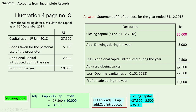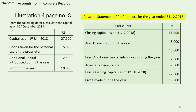Now we check whether we are correct. Closing capital 35,000, add drawings 5,000, gives 40,000. Minus additional capital 2,500 gives 37,500 as adjusted closing capital — correct. Opening capital given is 27,500. When you subtract that, you get profit of 10,000 which is given in the problem. So what we have done is correct. First find adjusted closing capital: opening capital plus profit. Then closing capital: adjusted closing capital minus additional capital introduced.